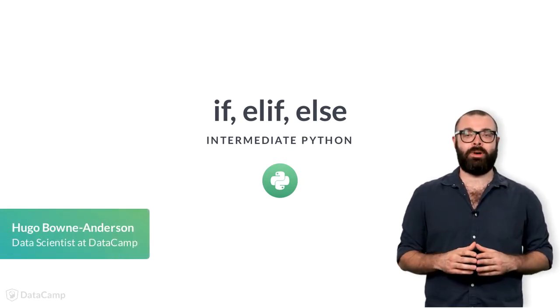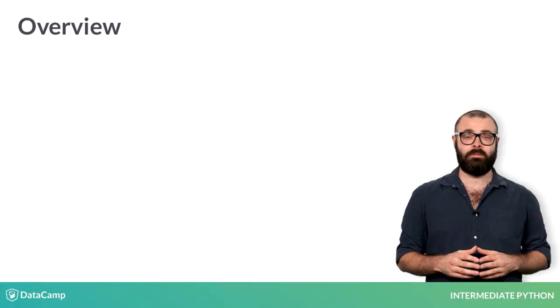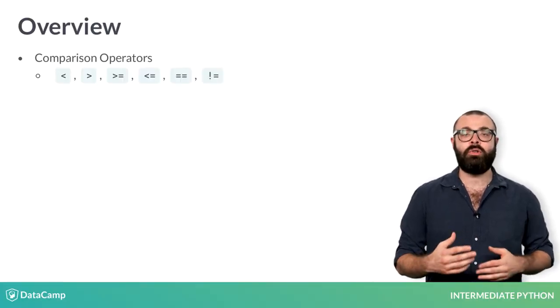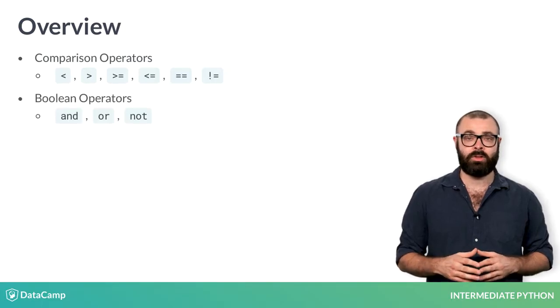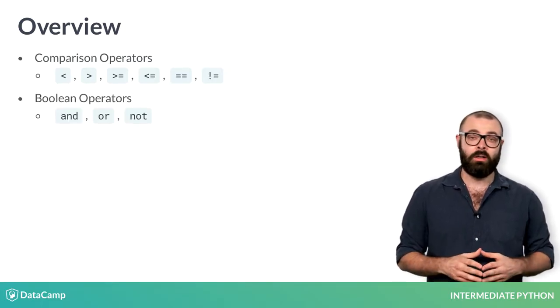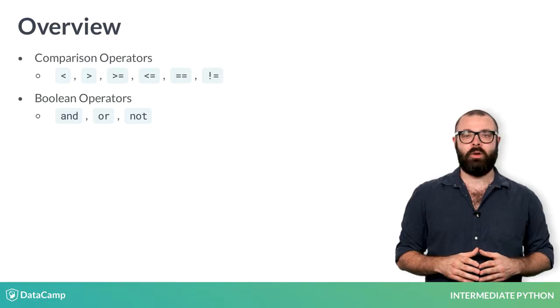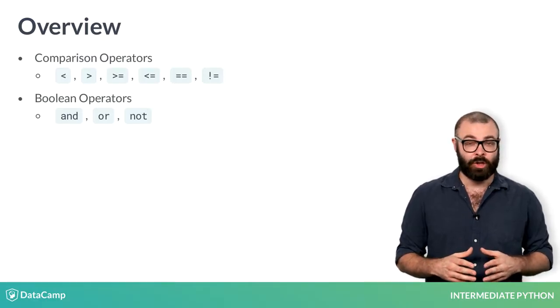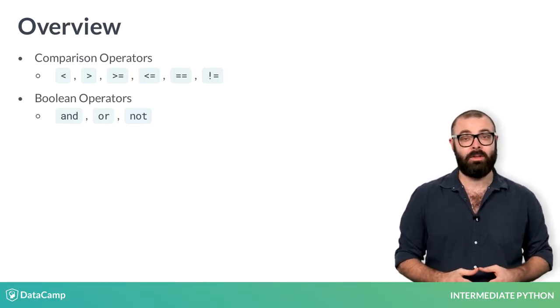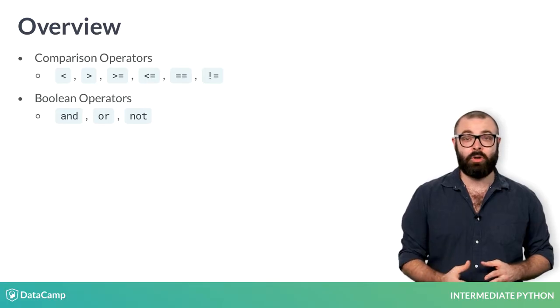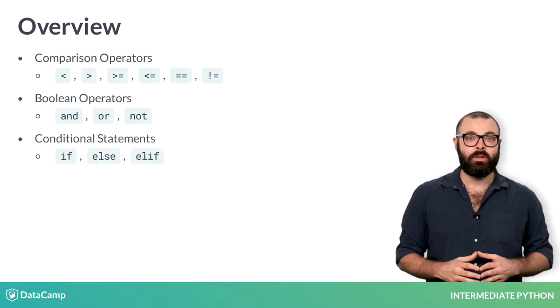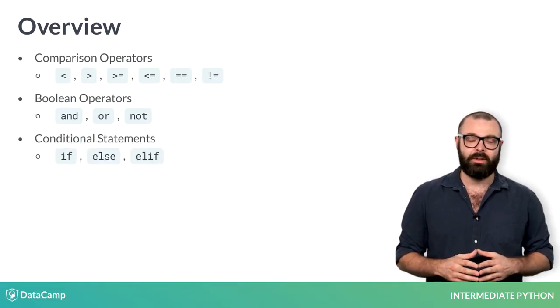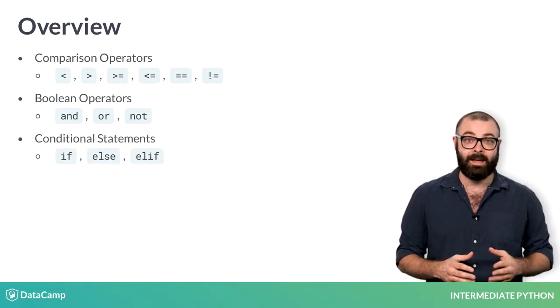So you know about comparison operators now, such as less than and greater than, and you also know how to combine the Boolean results using Boolean operators such as AND and OR. Things get really interesting when you can actually use these concepts to change how your program behaves. Depending on the outcome of your comparisons, you might want your Python code to behave differently. You can do this with conditional statements in Python: if, else, and elif.